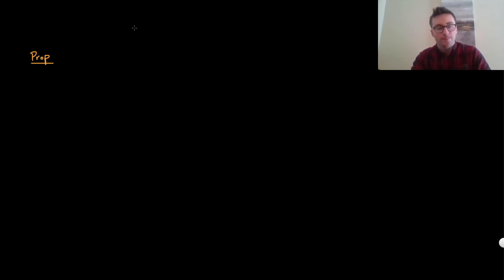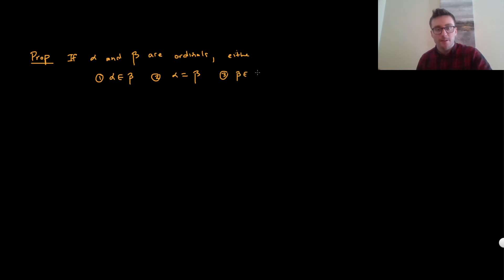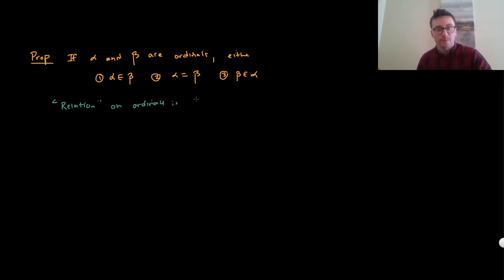If alpha and beta are ordinals, then either alpha is an element of beta — which we denote as alpha less than beta — or alpha and beta are equal, or beta is an element of alpha, meaning beta is less than alpha. In other words, the relation on the ordinals is total.